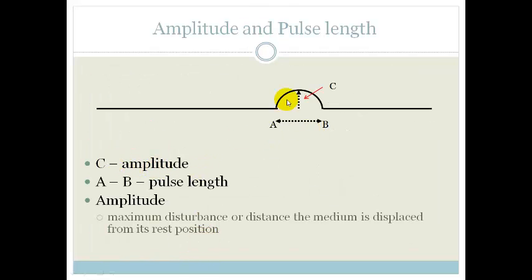Well, just definitions. First of all, the distance from the zero disturbance to the maximum height of the pulse is called the amplitude. The distance from the zero disturbance to the maximum height is called the amplitude of your pulse.